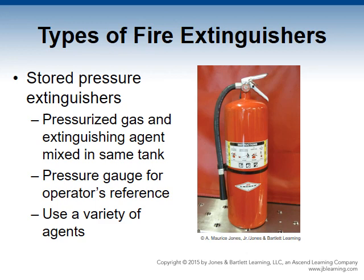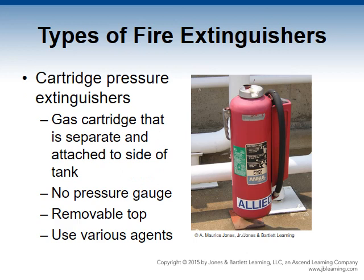Stored pressure extinguishers have the pressurized gas and extinguisher agent mixed in the same tank. The gas — air or nitrogen — is stored above the agent, keeping constant pressure on it, which forces the agent out through the nozzle or horn. An operator can determine if there is sufficient pressure by looking at the pressure gauge. These extinguishers use a variety of agents such as water, antifreeze, wetting agent, loaded stream, foam, dry chemical, wet chemical, dry powder, or halon.